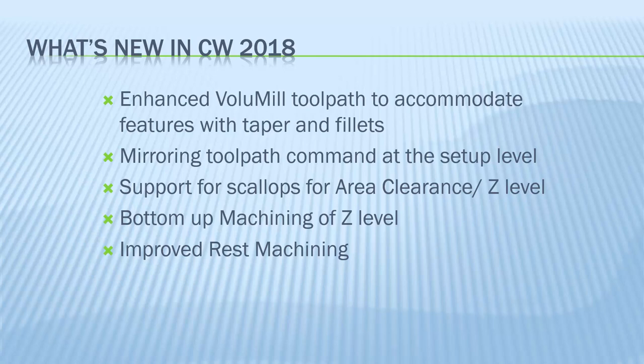There is now support for scallop in area clearance and Z level. In area clearance, you can enter a scallop so the allowance for the roughing will be constant all over the 3-axis area clearance. The same is true for the finishing Z level — you can now enter a scallop value and have a constant surface finish all over the operation. This is great for improving quality and surface finish.